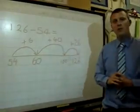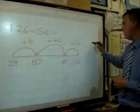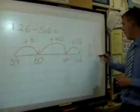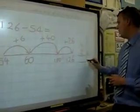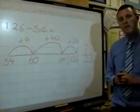Now what the children would do next, they would add up all of the jumps that they've created. So for example 6, 40 and 26. 6 and 6 is 2, carry the 1. And my final answer would be 72.